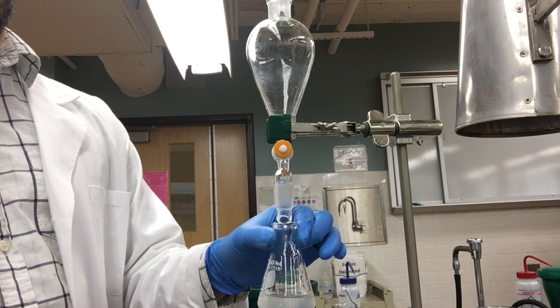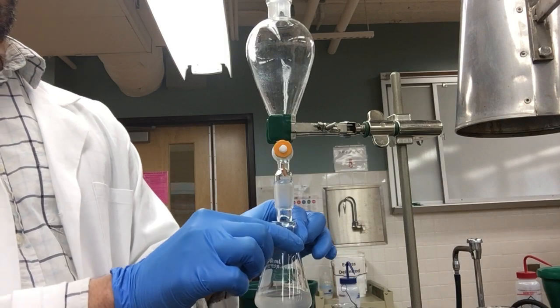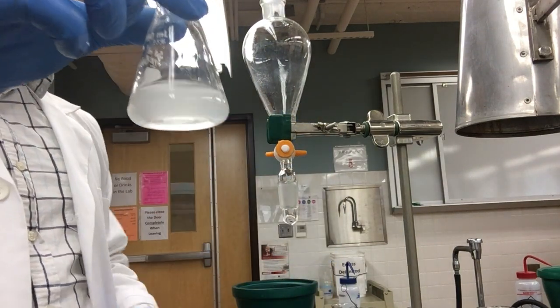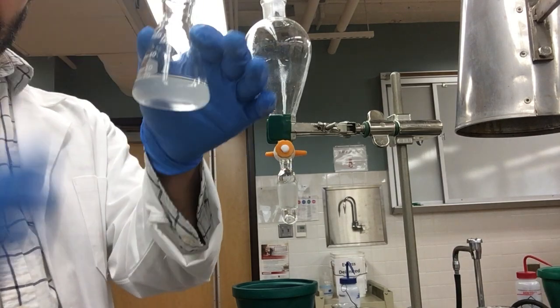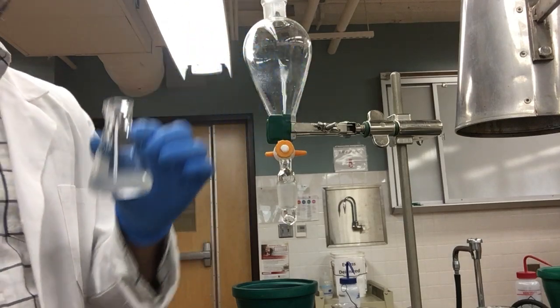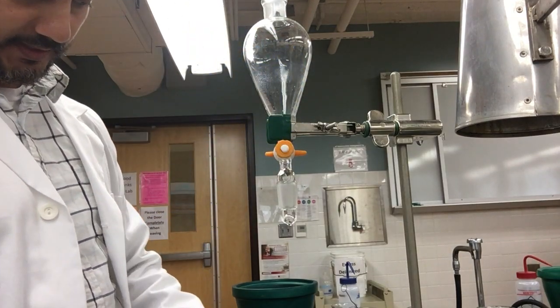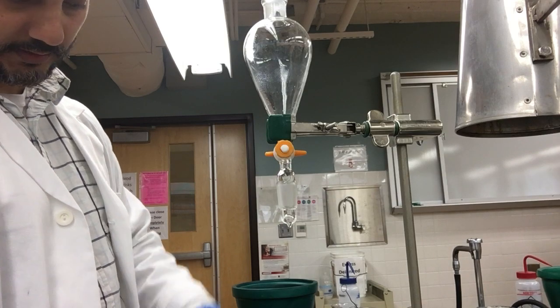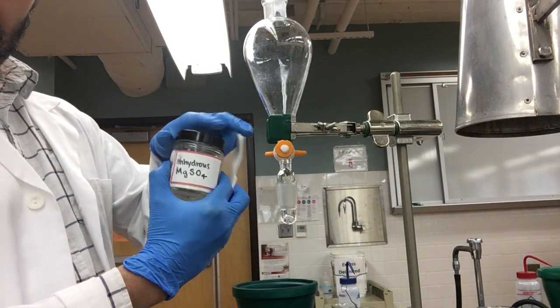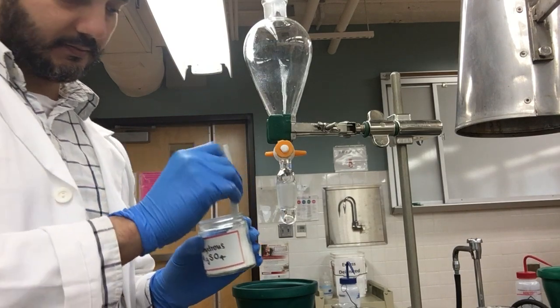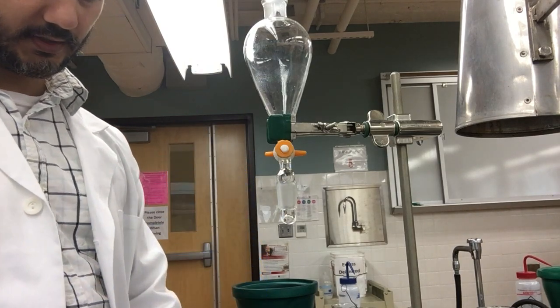As you can see, it is cloudy once again. What we will do is add a little bit of the drying agent that we have here to this organic layer. Magnesium sulphate or sodium sulphate can also work.